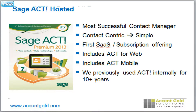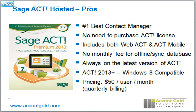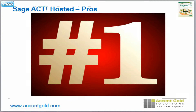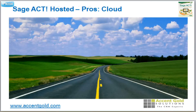ACT has recently come out with its hosted model. ACT is the most successful contact manager — it's contact-centric, which keeps things simple. It has now come out with its first SaaS offering, meaning you pay $50 a month and you get Sage ACT hosted and taken care of by ACT. It includes ACT for Web and ACT Mobile. We've been using ACT for a number of years — it's a good product, though speed-wise it probably doesn't compare with Sugar, but they are building in Ajax technology. As the number one contact manager on the market moving toward the cloud, the road ahead does look good.